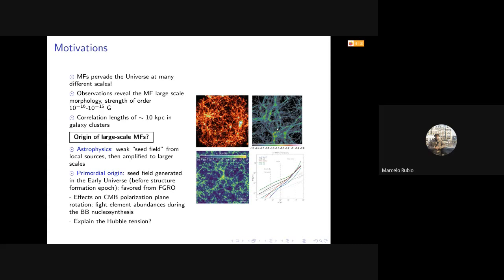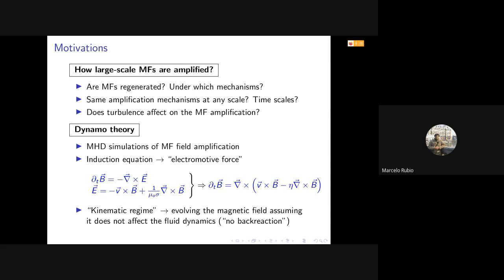So another question: how are these large-scale magnetic fields amplified? Are these magnetic fields regenerated, and under which mechanism? Also, if the same amplification mechanism holds at any scales, or are there different mechanisms, and at which time scales?